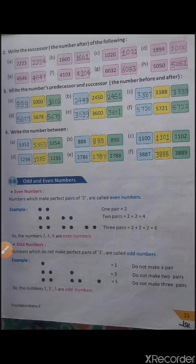And in C, the predecessor of 3388 is 3387 and the successor of 3388 is 3389. In D, the predecessor of 3600 is 3599 and the successor of 3600 is 3601.